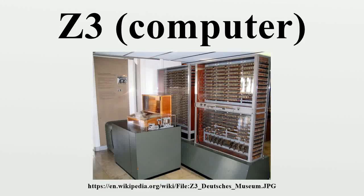The Z3 was an electromechanical computer designed by Konrad Zuse. It was the world's first working programmable, fully automatic digital computer. The Z3 was built with 2,000 relays, implementing a 22-bit word length that operated at a clock frequency of about 5 to 10 Hz. Program code and constant data were stored on punch film. The Z3 was completed in Berlin in 1941. The German Aircraft Research Institute used it to perform statistical analyses of wing flutter.